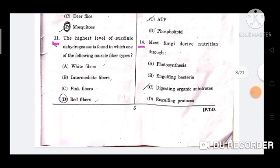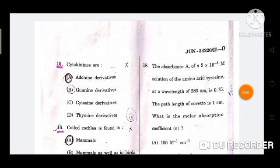Question number 14: Most fungi derive nutrition through? The correct option is option C, digesting organic substrates. Question number 15: Cytokinins are? The correct answer is option A, adenine derivatives.